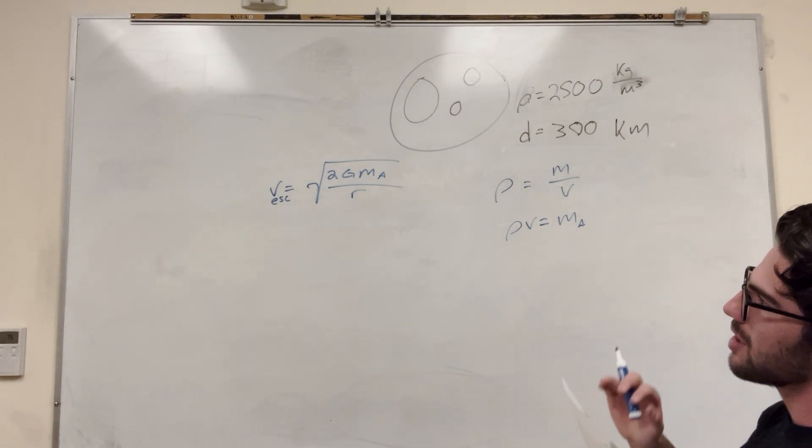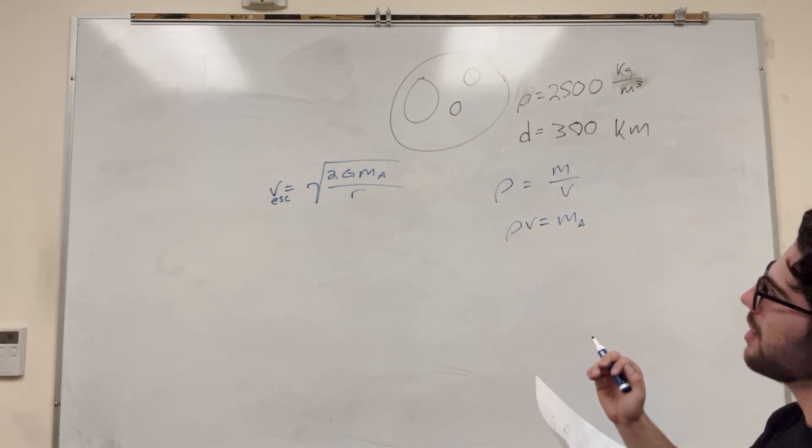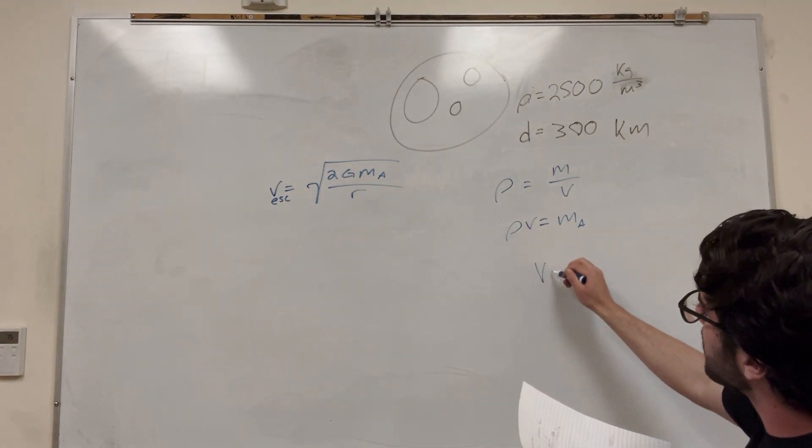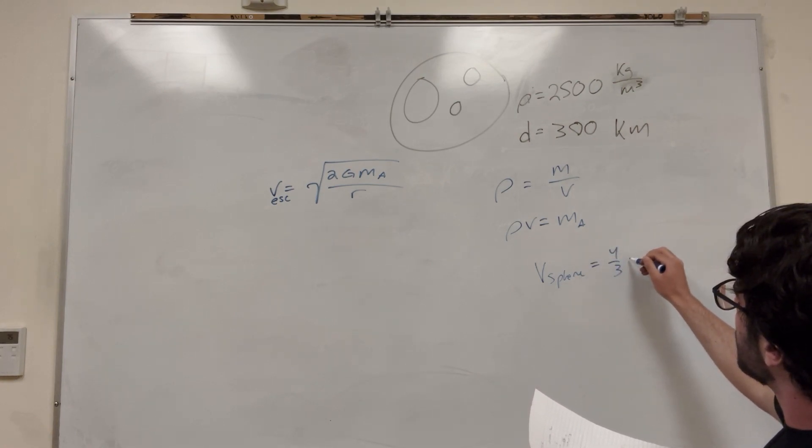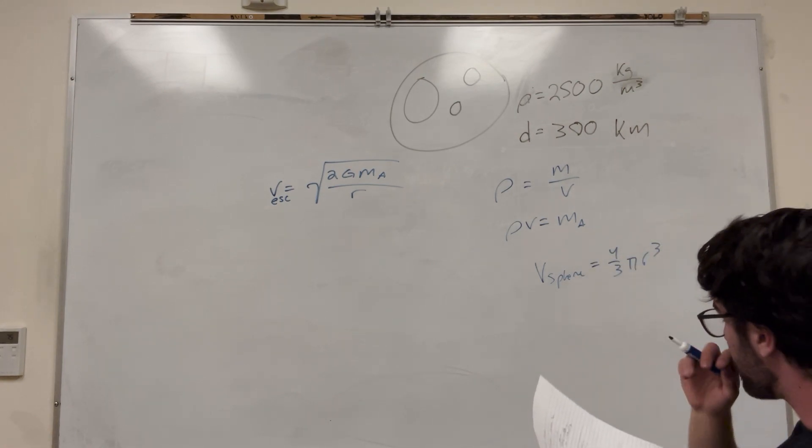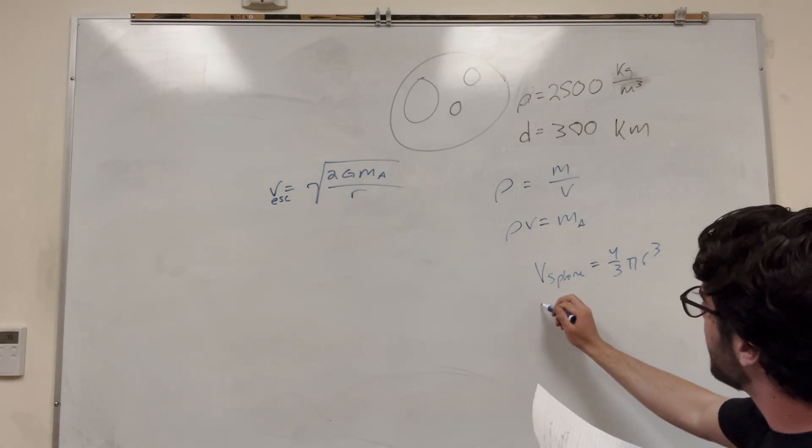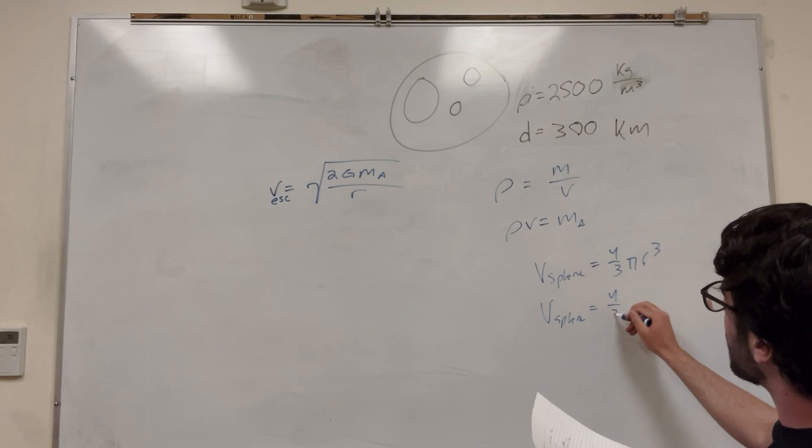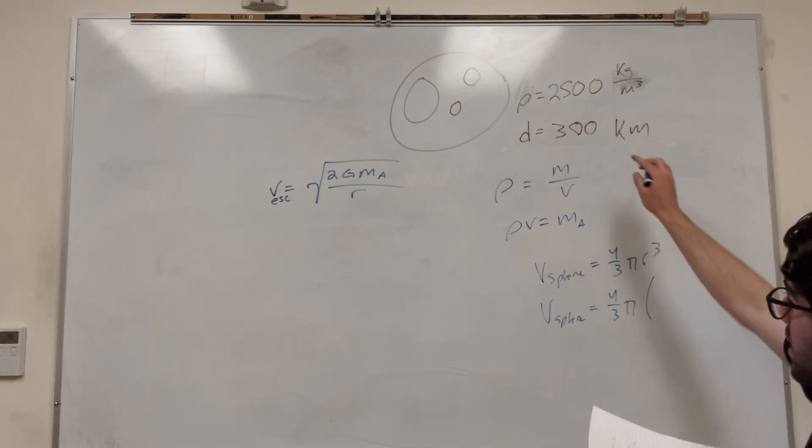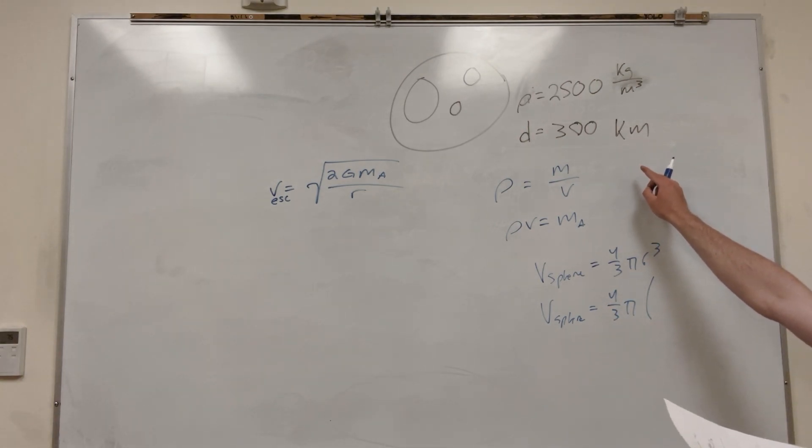We're going to assume that our asteroid is a sphere. So for the sphere, the volume of the sphere is equal to 4 thirds pi radius cubed. So our volume is equal to 4 thirds pi. Now our diameter is 300,000 kilometers, but to get radius from diameter, we've got to divide it by 2.